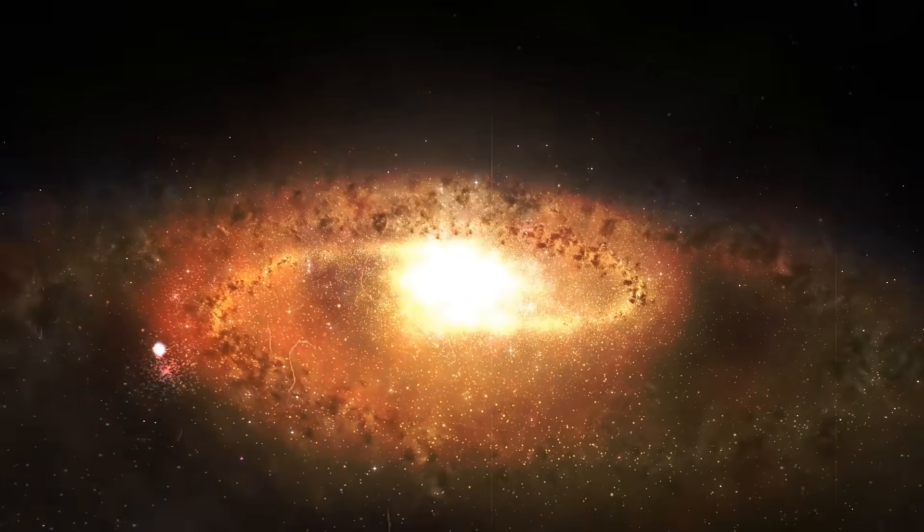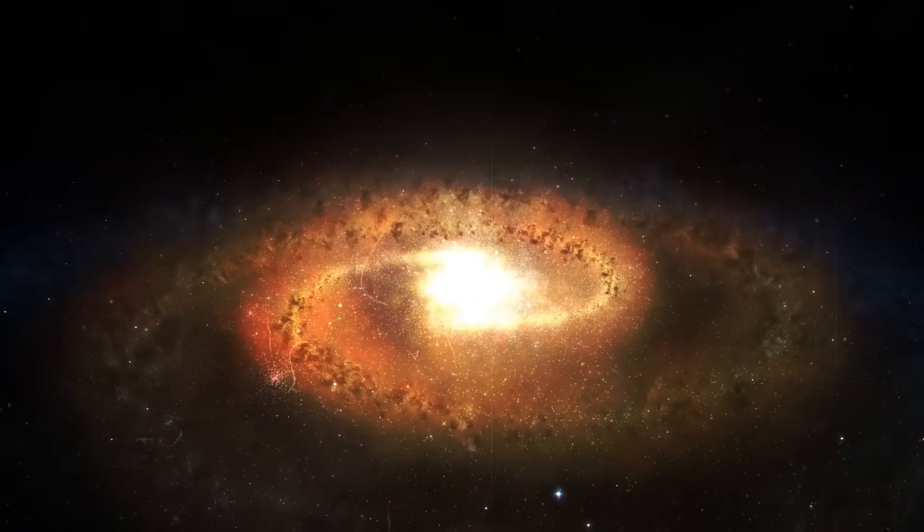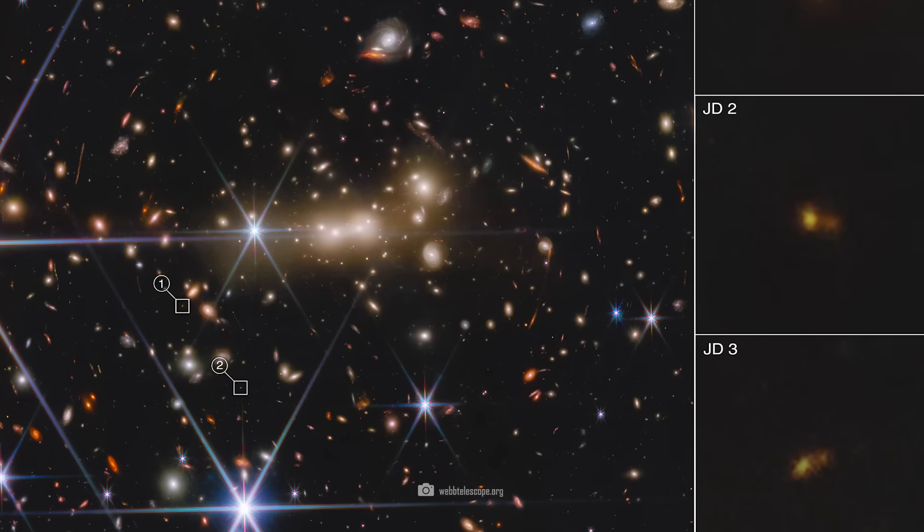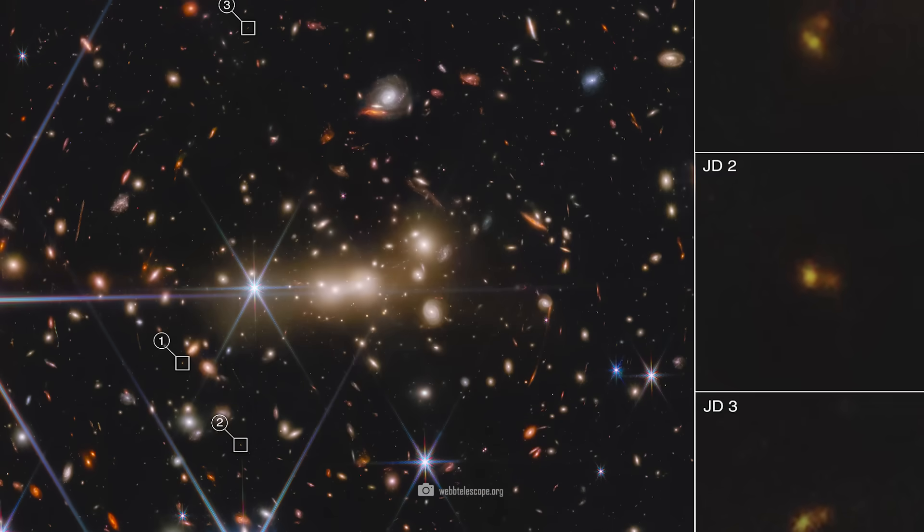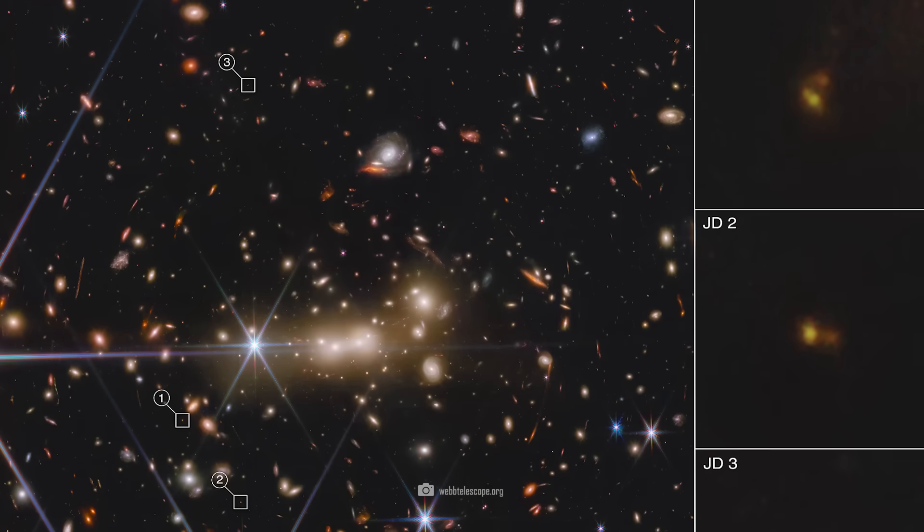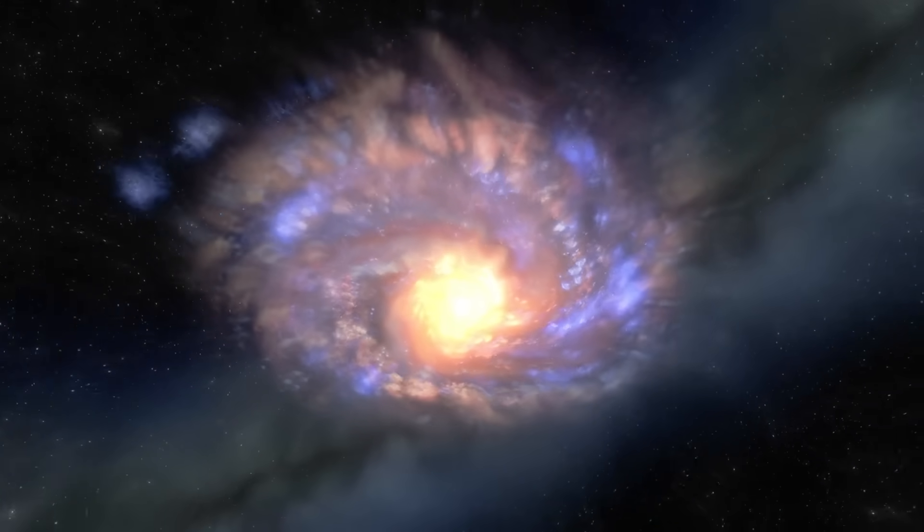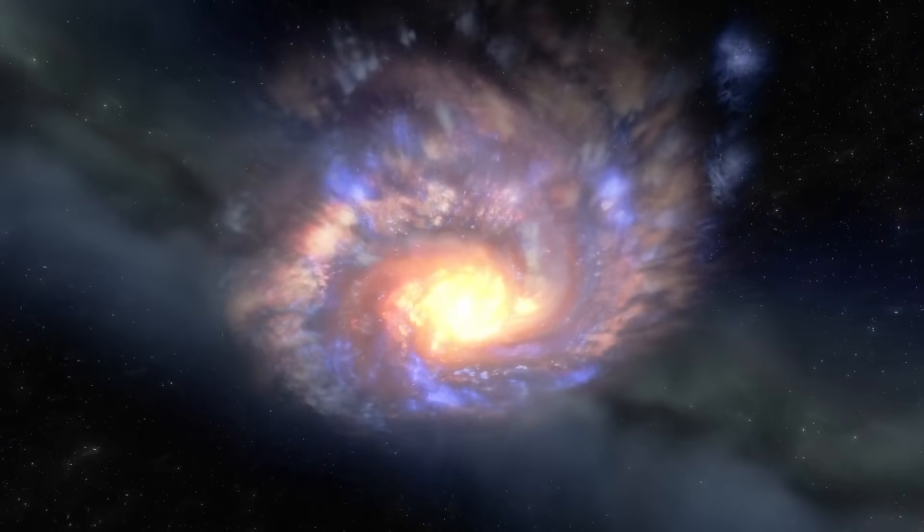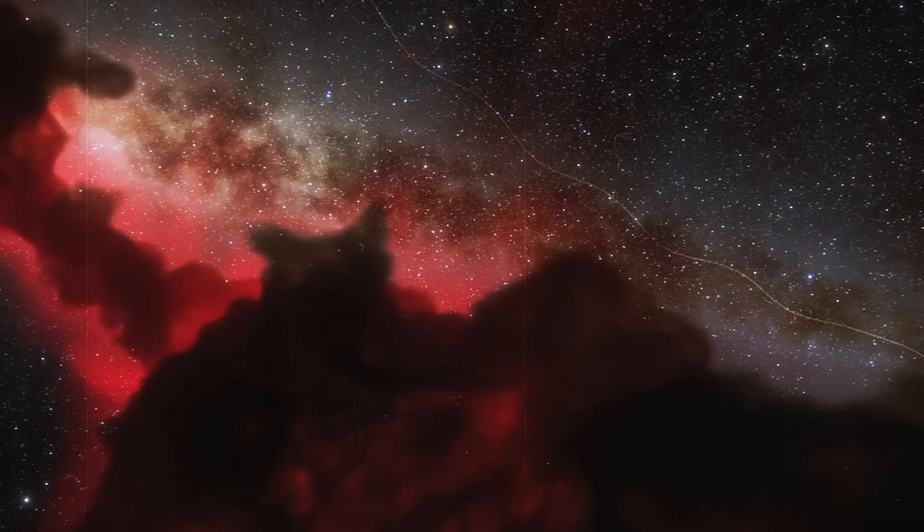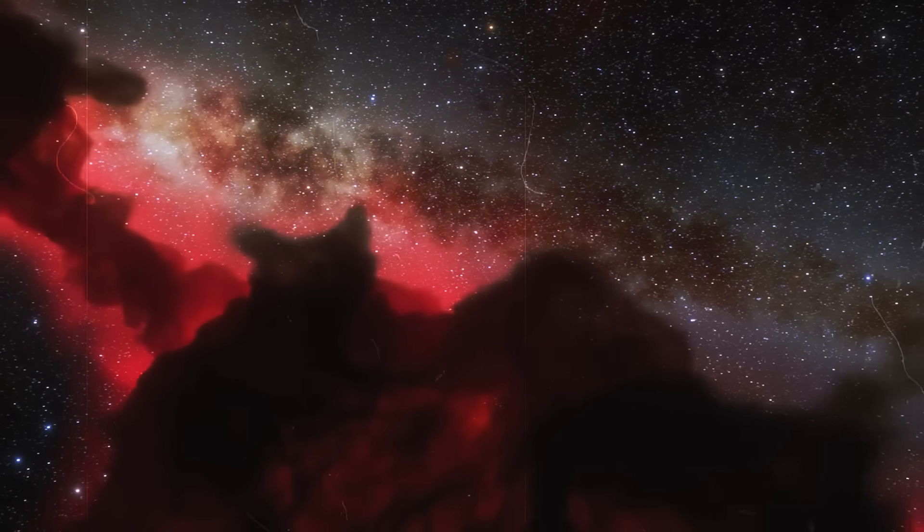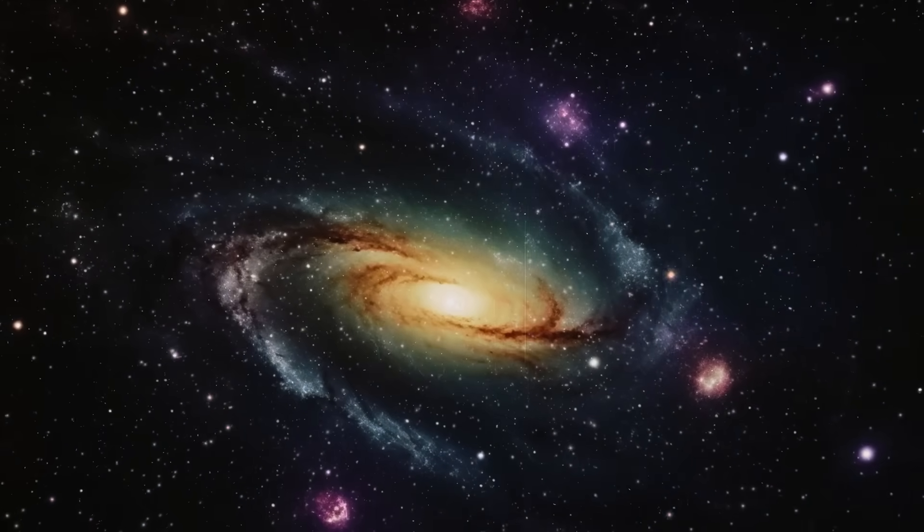Since James Webb discovered galaxies that are 13.6 billion years old, or even older, we also have to ask ourselves whether our methods of determining the age of these galaxies are correct. Here again, astronomers used the redshift. The higher the red component, the further away an object is said to be, and therefore, the older it is.